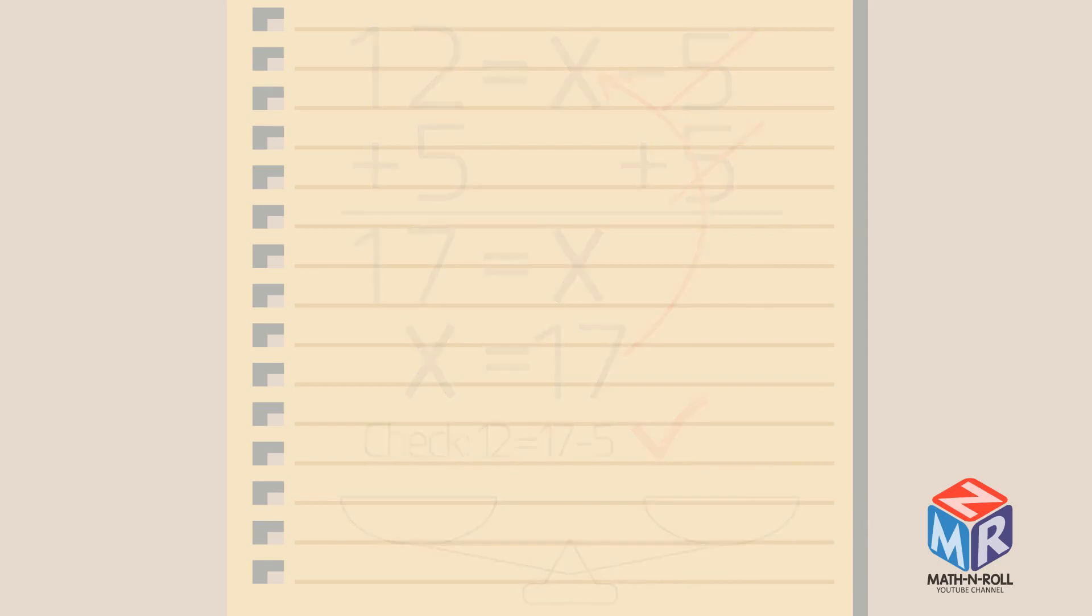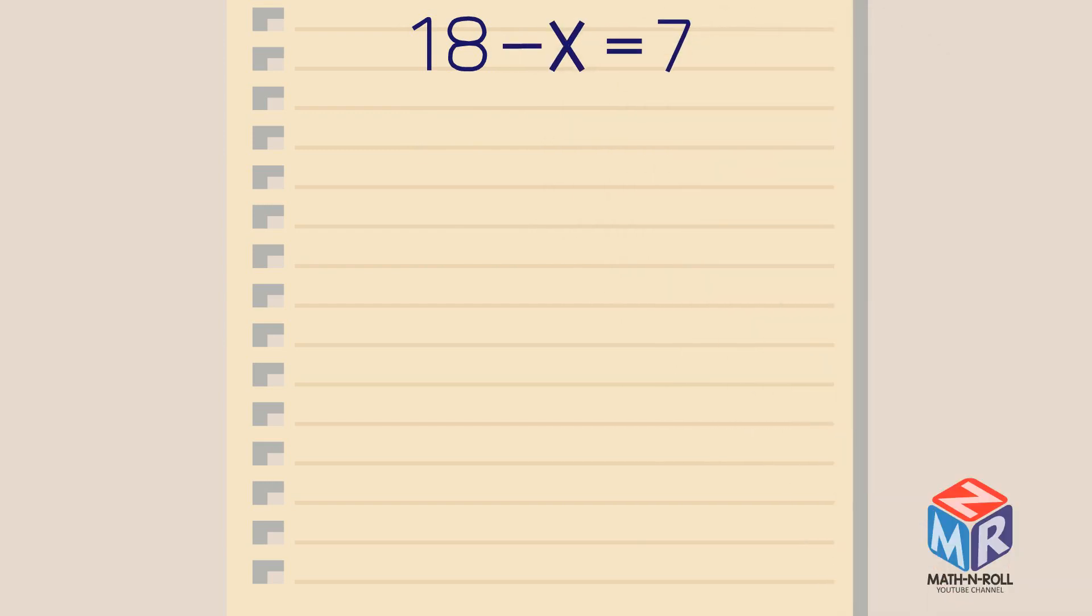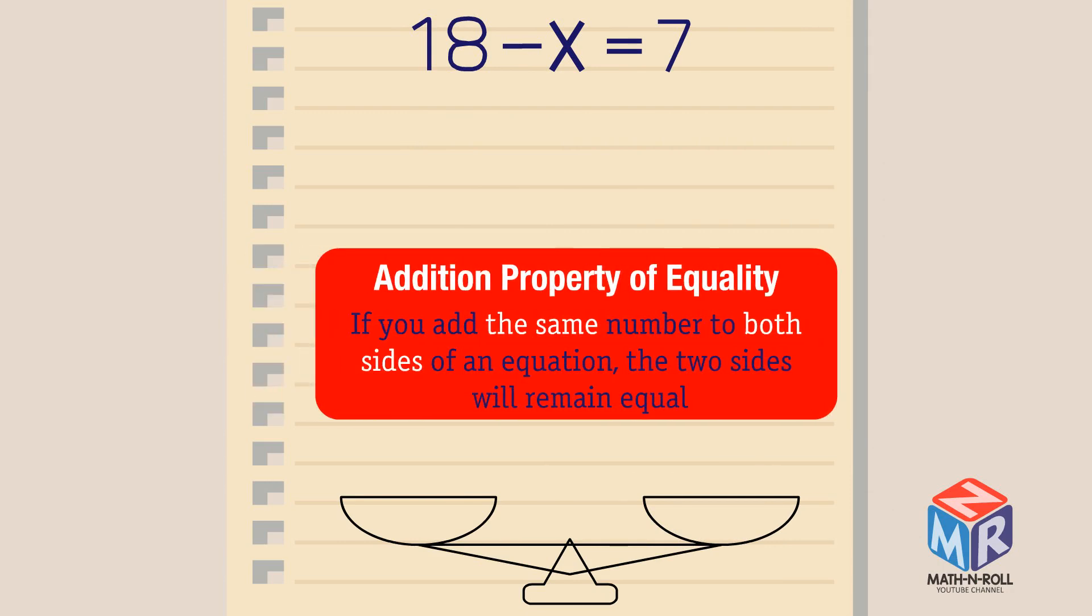Let's try another example. 18 minus x equals 7. For this equation, we will be using the addition property of equality once again.